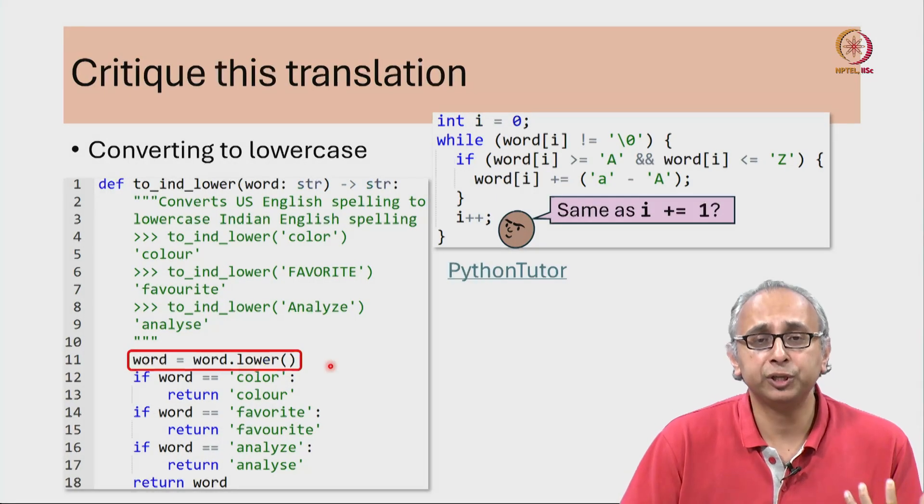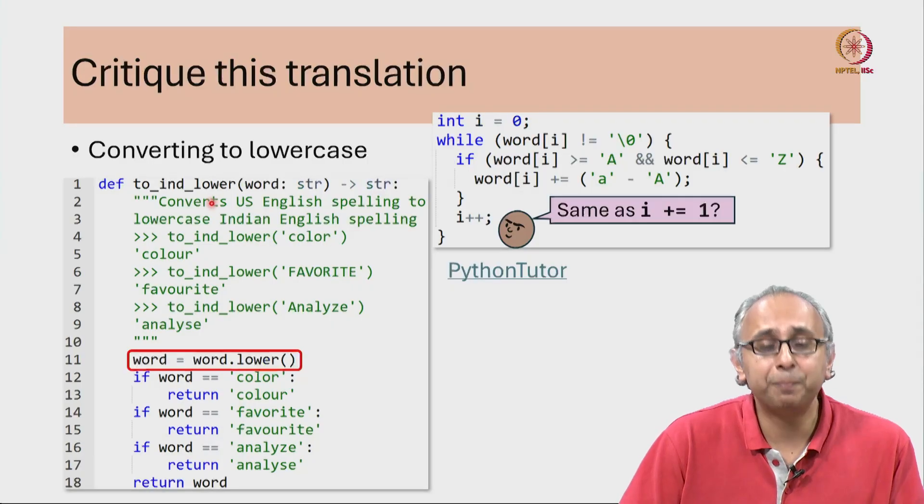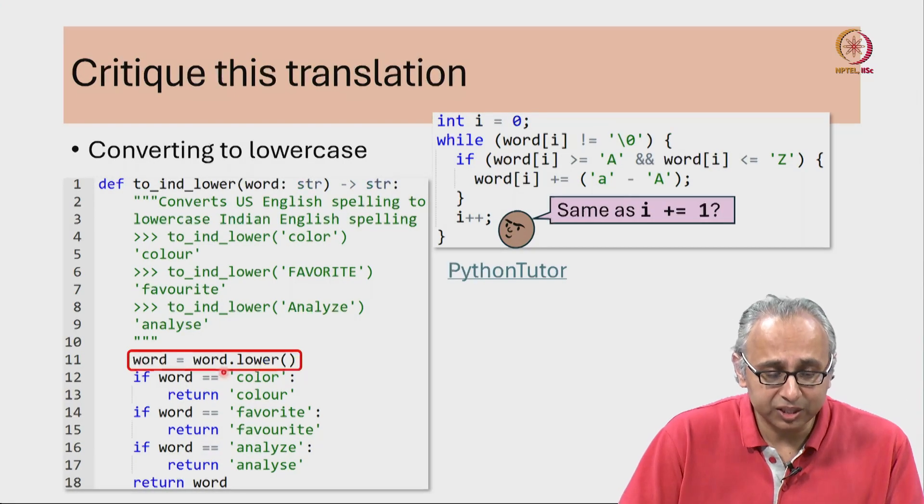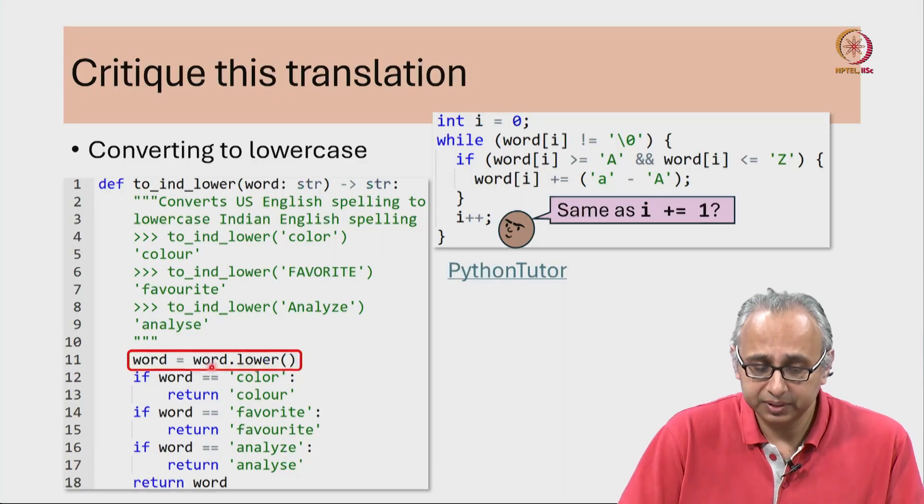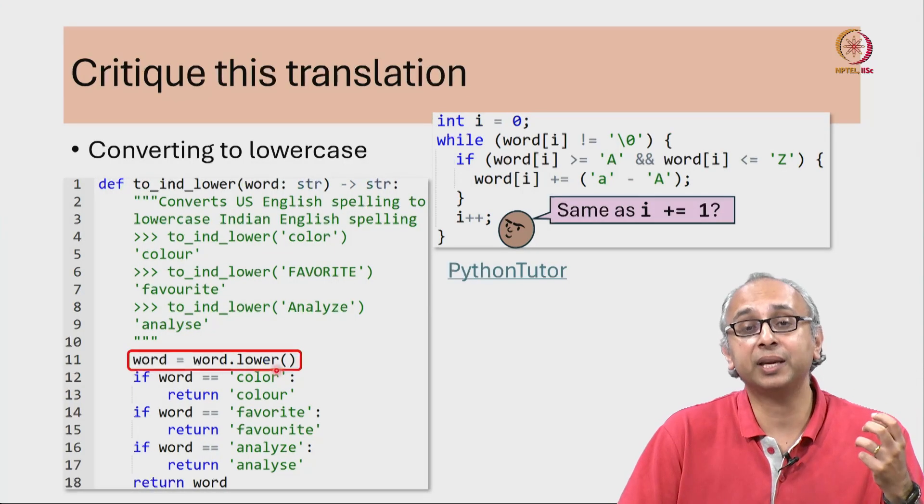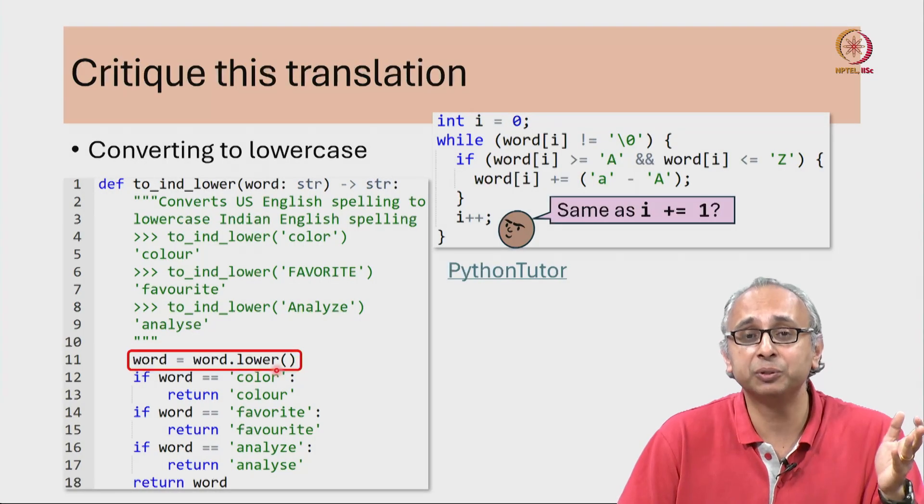If we are trying to faithfully translate this Python code into C, we know that in Python strings are immutable. This particular statement takes that immutable string and makes it into lower case, which does not modify the original string. Remember the original string is immutable.